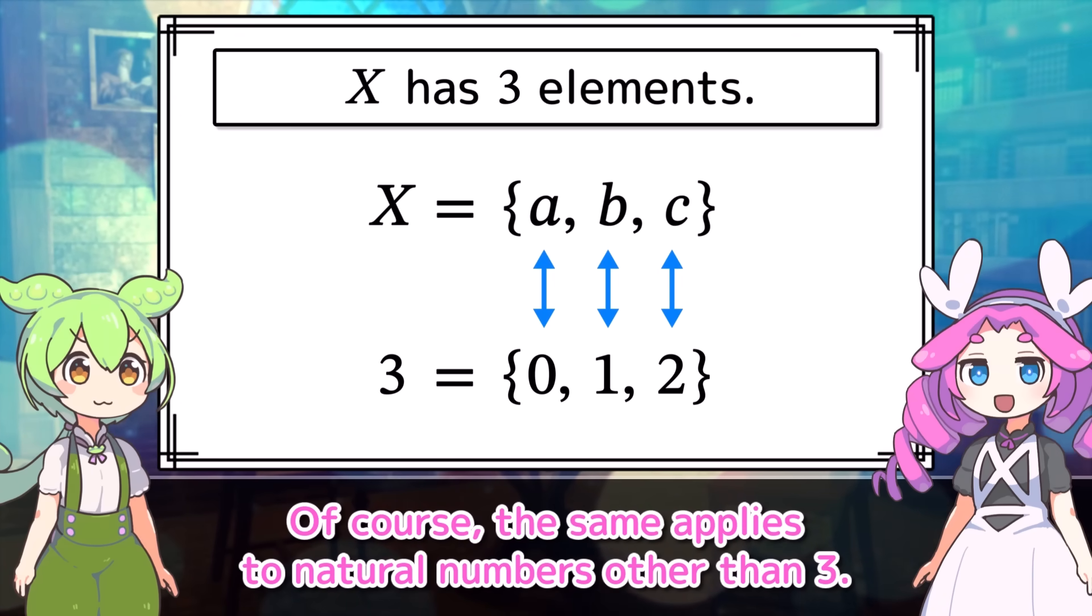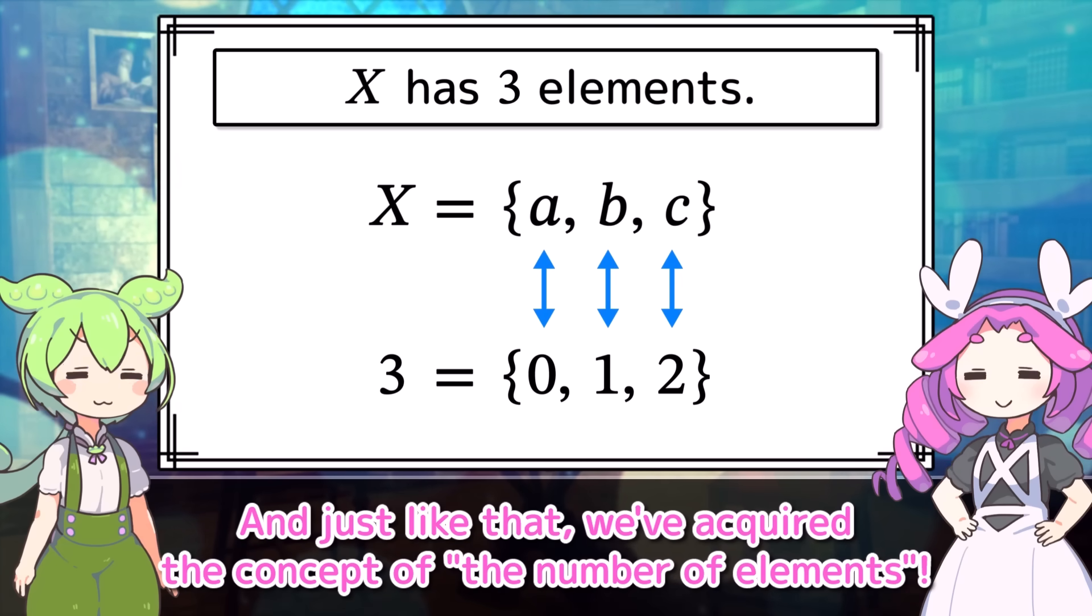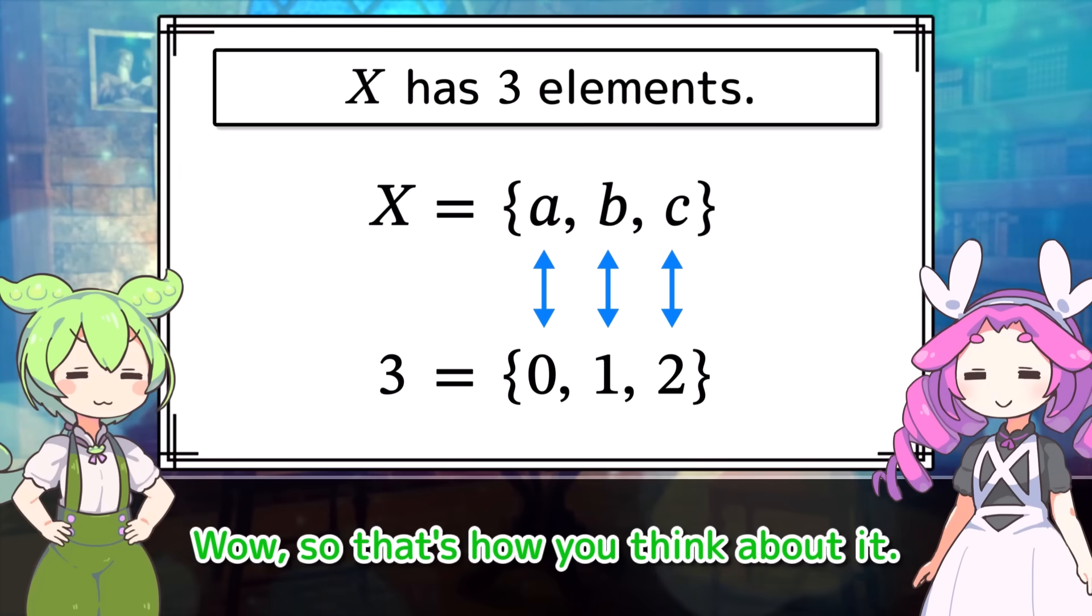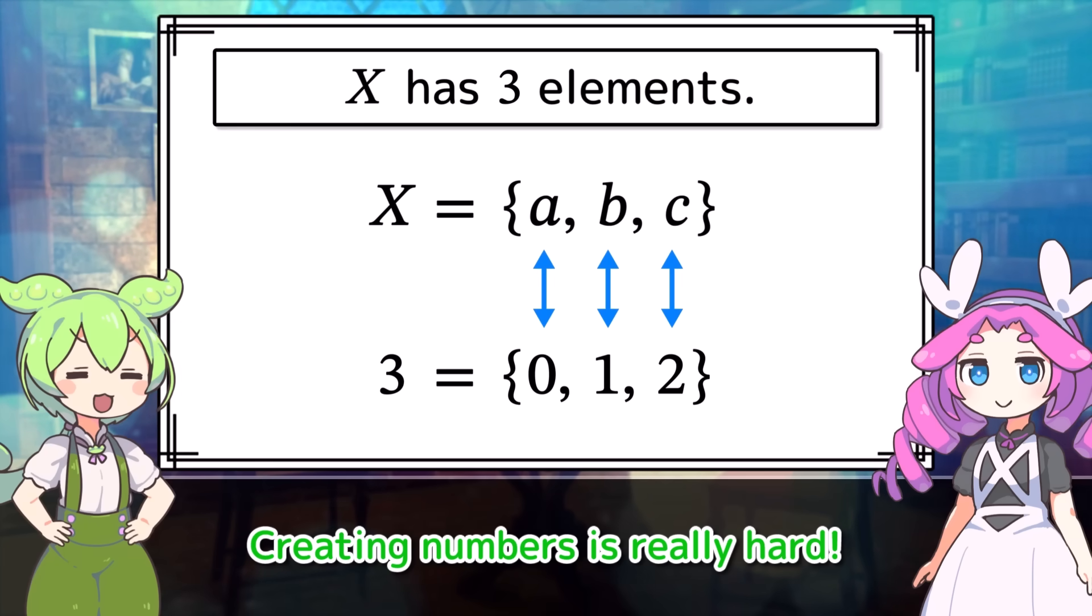So this is what it really means to say X has three elements. Of course, the same applies to natural numbers other than three. And just like that, we've acquired the concept of the number of elements. Wow, so that's how you think about it? Creating numbers is really hard.